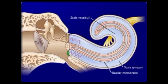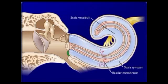Short wavelengths from high-pitched sounds cause displacement of the basilar membrane near the oval window. This movement is detected by hair cells of the spiral organ, which are not visible in the animation.